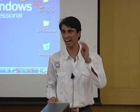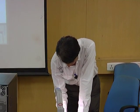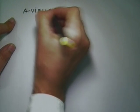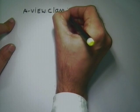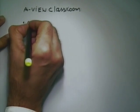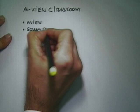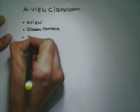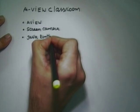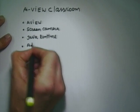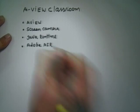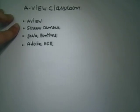Along with AView, there are four packages provided: AView classroom, screen camera, Java Runtime, and Adobe Air. When you install the software, it will first install AView classroom, then screen camera, then Java Runtime, and then Adobe Air. Adobe Air is the runtime to run the whole application.